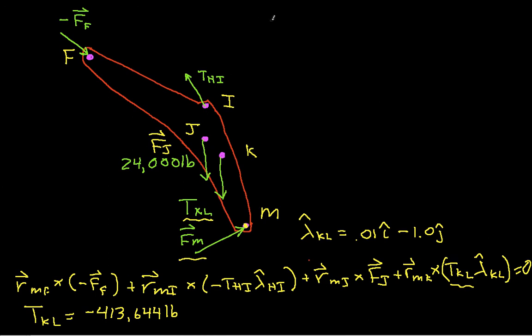The sum of the forces is equal to zero. So we have minus F-F minus T-H-I lambda-hat H-I plus F-J plus T-K-L lambda-hat H-I plus F-J plus T-K-L lambda-hat H-I. F-M is equal to zero.